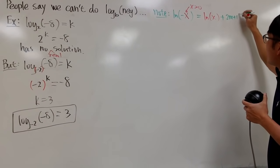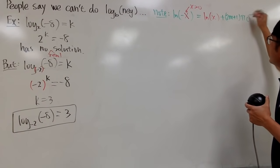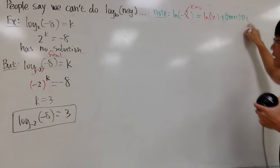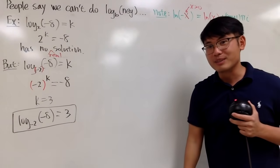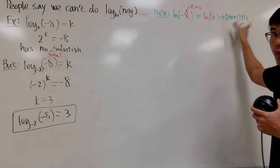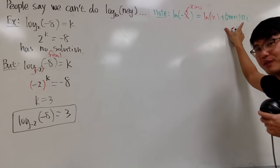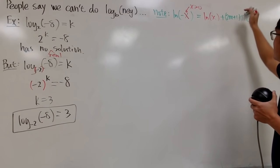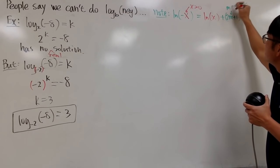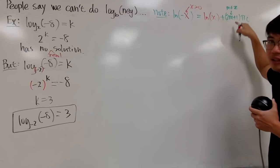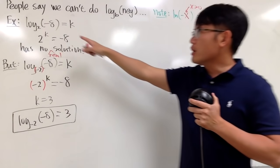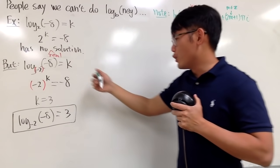2m plus 1 times pi i. This i is what brings us to the complex world, thanks to the ln of negative 1. This is the ln of negative 1 part. And then, this m is just any integer. So now, let's talk about how we can deal with this.